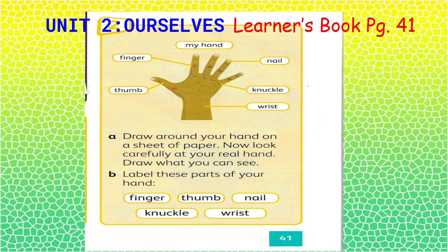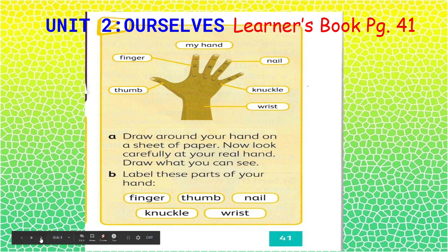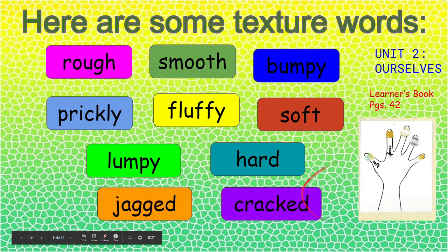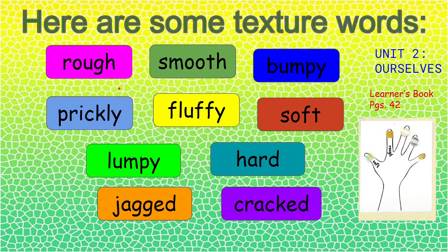Draw around your hand on a sheet of paper. Look carefully and then label these parts of your hand: the finger, the nail, the knuckle, the wrist, and the thumb. After you draw your hand, here are some texture words we will use to describe the texture of a particular object.